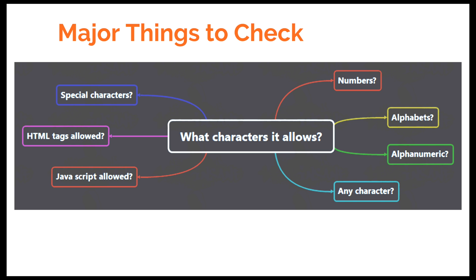The mind map also covers testing for numbers, alphabets, alphanumeric input, and any character type. On the left side, check whether special characters, HTML tags, and JavaScript are allowed or not. If you follow this kind of mind map for your testing, you will definitely find bugs and may also uncover certain security vulnerabilities.